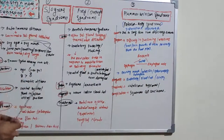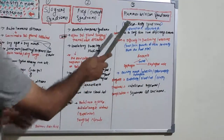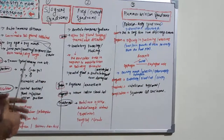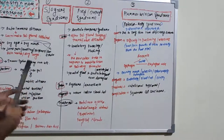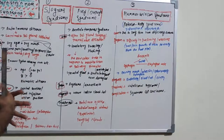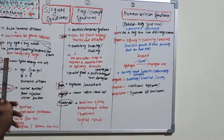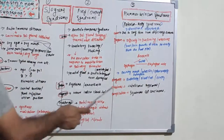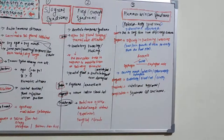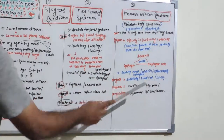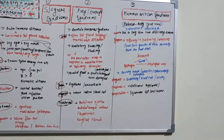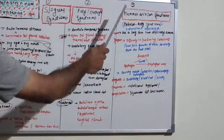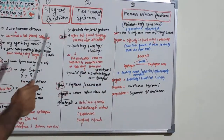Diagnosis is primarily by endoscopy, blood test, and biopsy. Treatment is mainly nutritional intervention since it is caused by iron deficiency anemia. Nowadays, Plummer-Vinson syndrome is quite rare because nutritional deficiencies are less prevalent. The complication associated with Plummer-Vinson syndrome is squamous cell carcinoma.